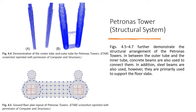Between the outer tube and inner tube, concrete beams are used to connect them, with steel beams also used primarily to support the floor slabs. Figure 4.4 demonstrates the center tube and the outer tube of the Petronas Towers. According to the journals reviewed, data was modeled in ETABS for analysis. The exact data from the real designers was not available, but the gathered data was sufficient to check the building's integrity, deflection, maximum shear, and maximum moment.